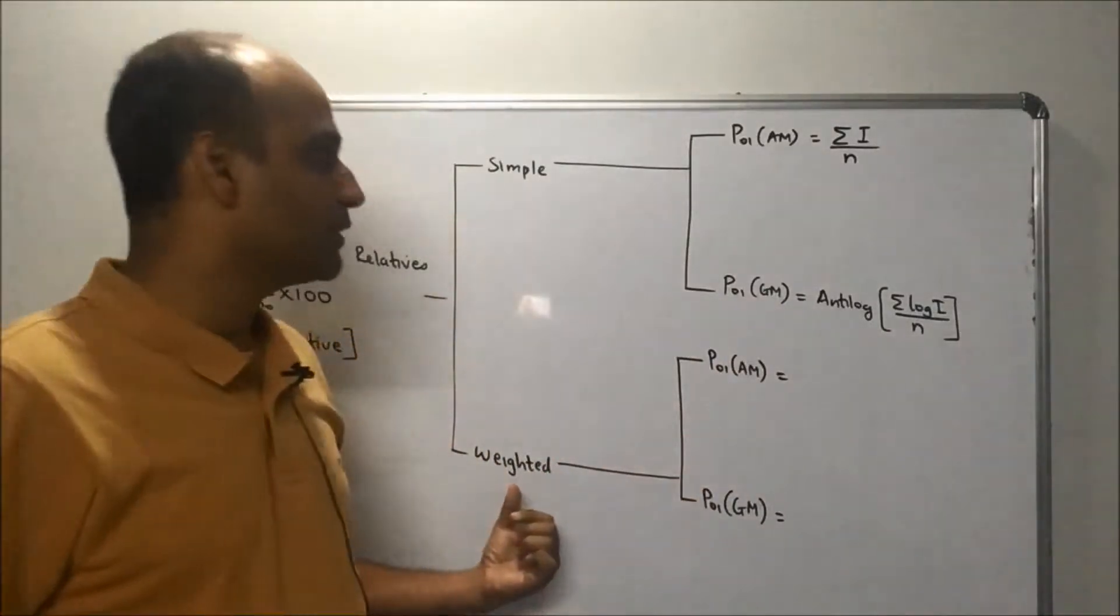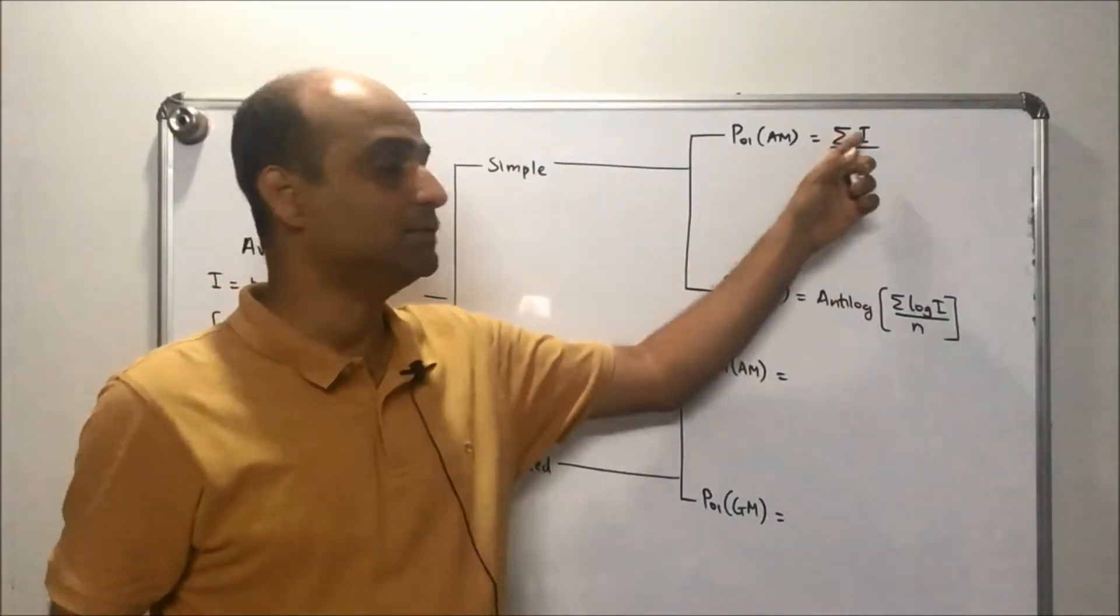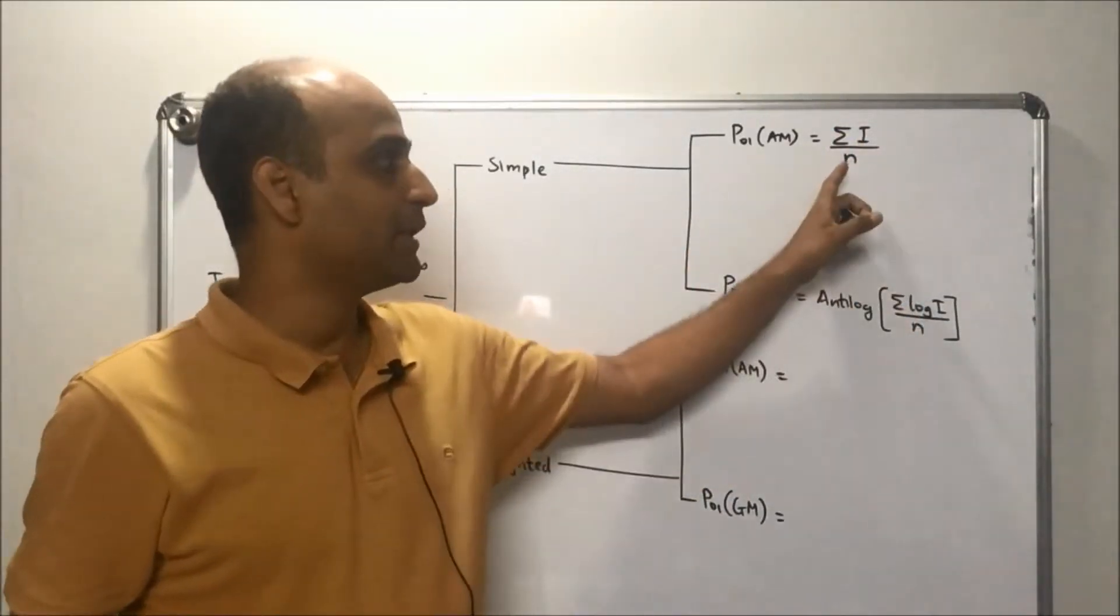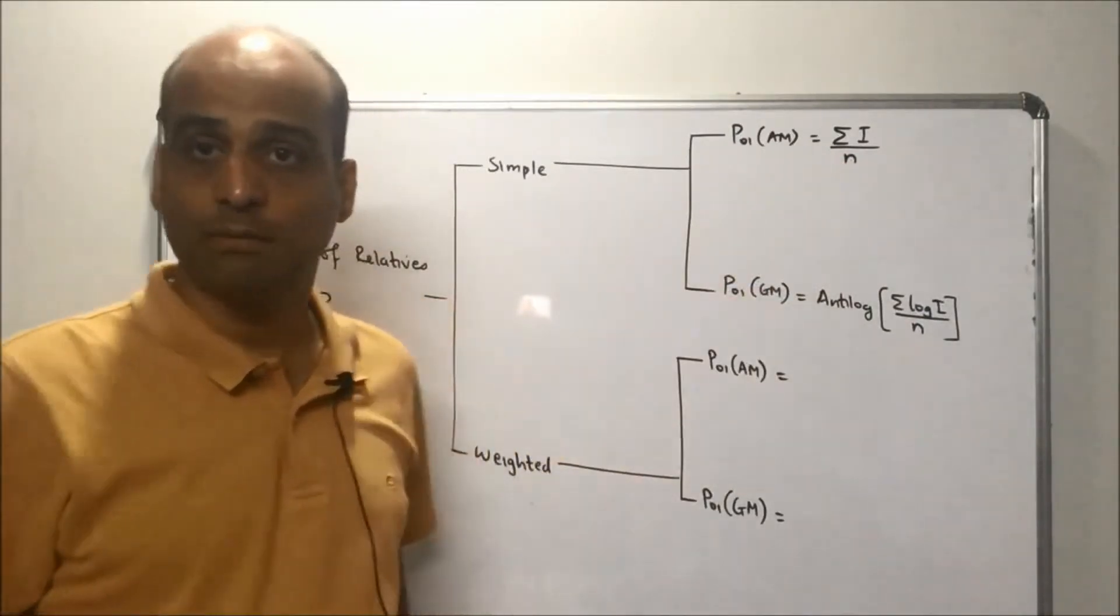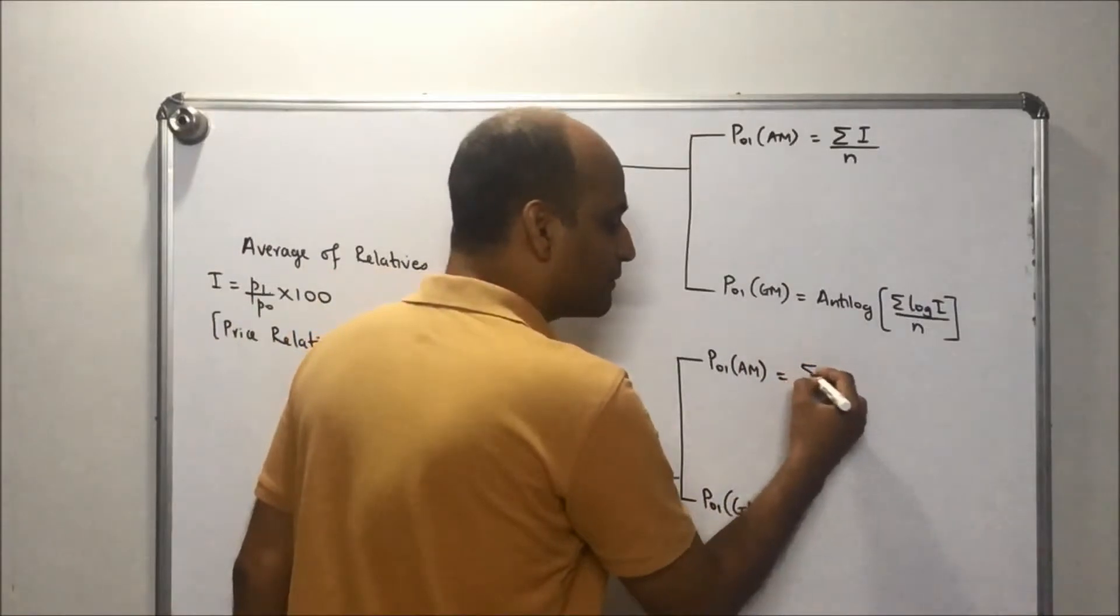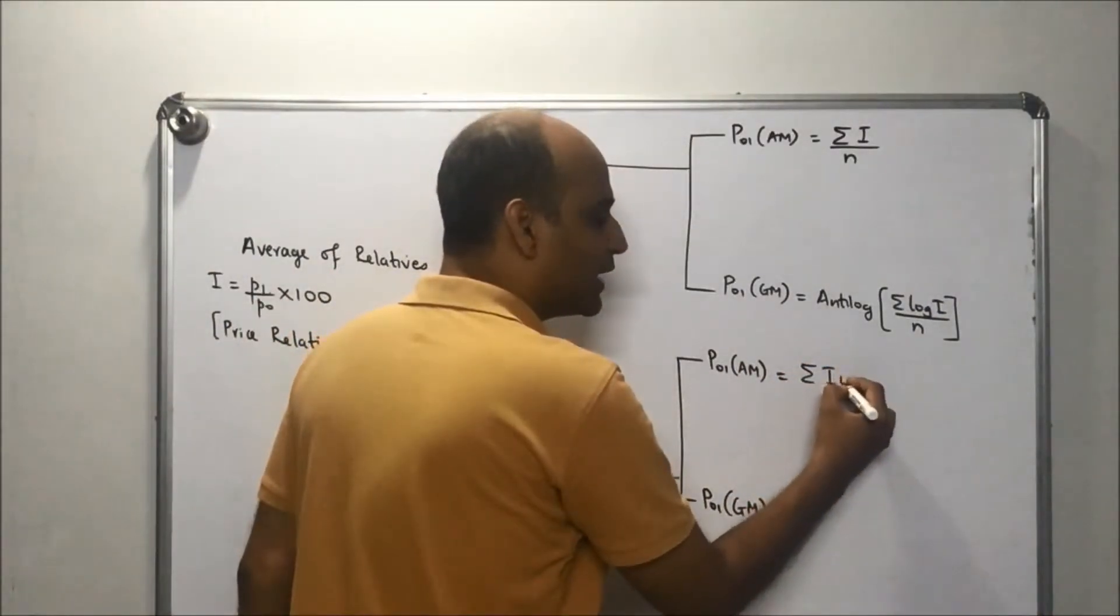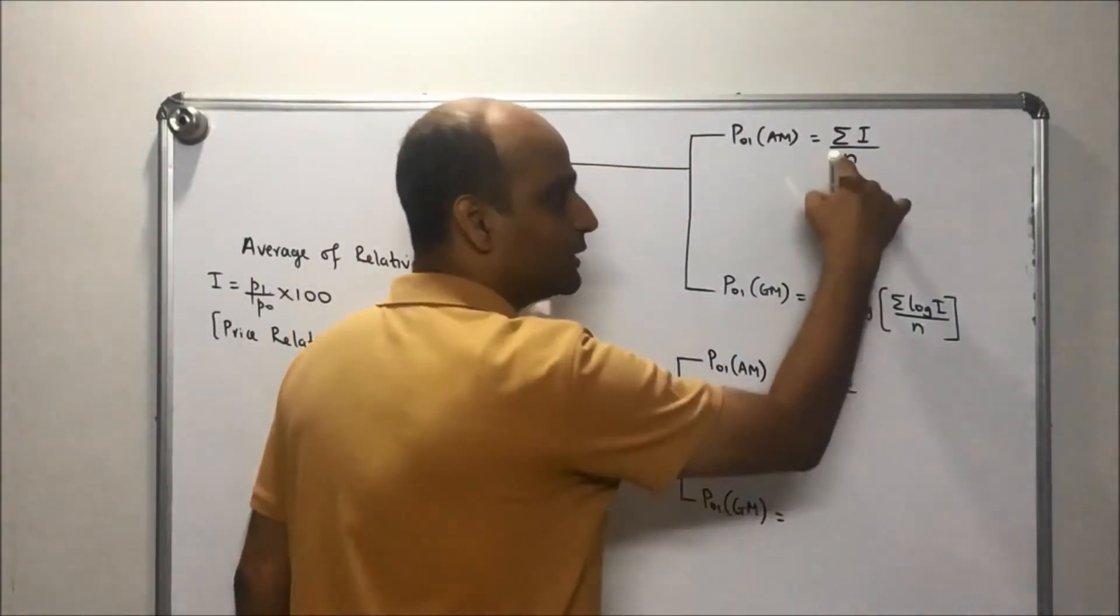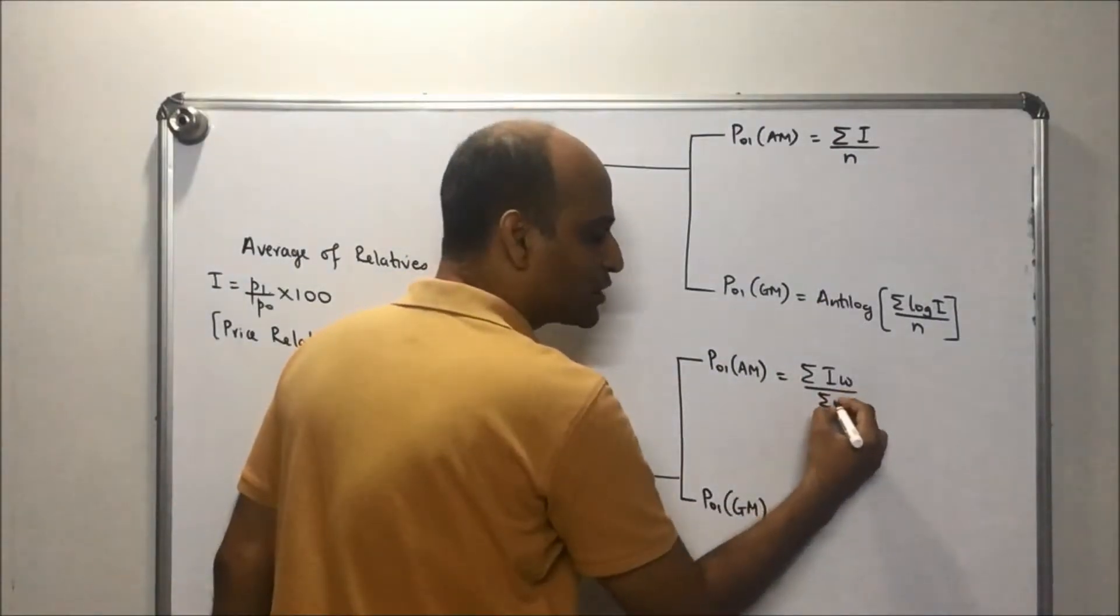In case of weighted, we just have to multiply weights and then replace n by summation w, that is the total weightage. So the first formula becomes summation I times w upon summation w.